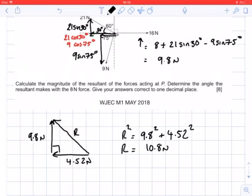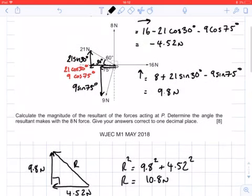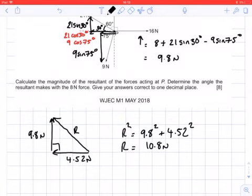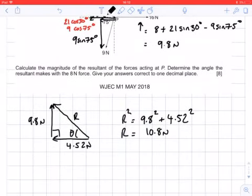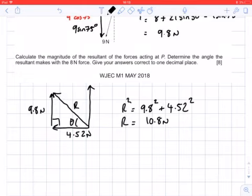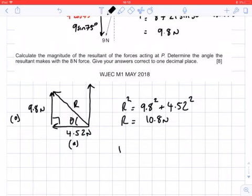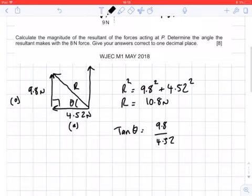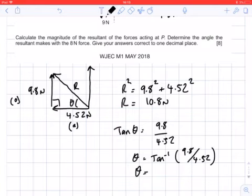The question asked for the angle the resultant makes with the 8 newton force, which is the vertical. I'll do my usual calculation of theta, but I need to be mindful that the 8 newton force is acting in that direction, so I'll need to take my answer away from 90 degrees. I've got opposite and adjacent, so tan theta equals opposite over adjacent, which is 9.8 over 4.52. Therefore theta equals the inverse tan of 9.8 over 4.52, which is 65.3 degrees.